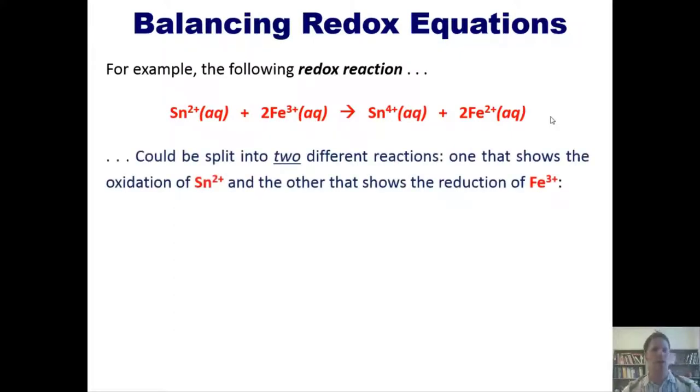So we can actually split this overall redox reaction into two different reactions: one that shows the oxidation of tin and the other that shows the reduction of iron. How would we do that? Well, we begin by just separating them out like this. In the oxidation step we've got Sn2+ turning to Sn4+. To balance that charge-wise, we have to put two electrons on the right side.